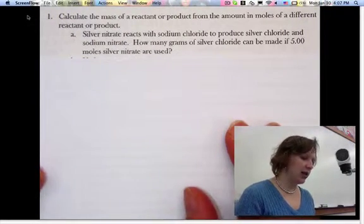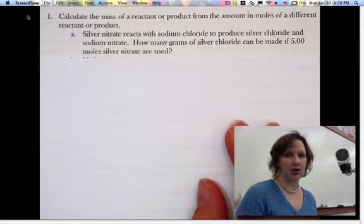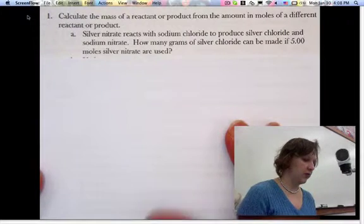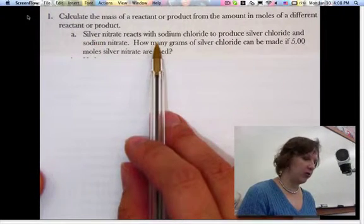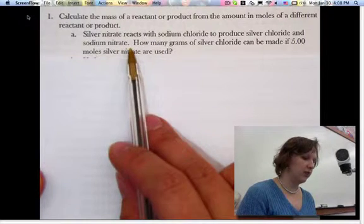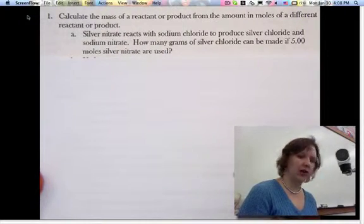This problem says calculate the mass of a reactant or product from the amount in moles of a different reactant or product. Silver nitrate reacts with sodium chloride to produce silver chloride and sodium nitrate. How many grams of silver chloride can be made if 5 moles silver nitrate are used?